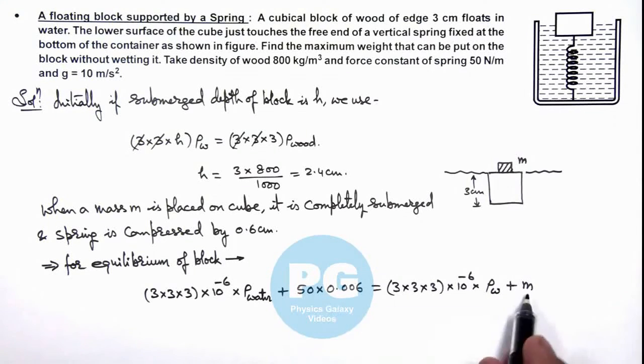So if we simplify this relation, the value of m will be here. We can see 50 multiplied by 0.0006 will be 0.3, plus if we take these terms on the other side it is ρ water minus ρ wood. This we can write as wood just to avoid confusion.